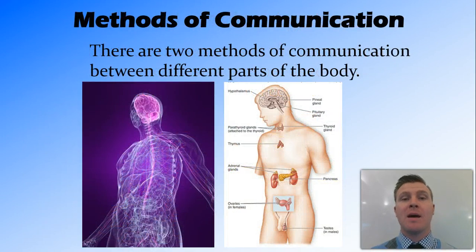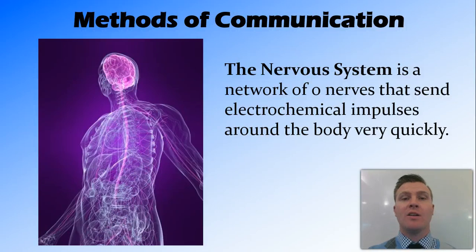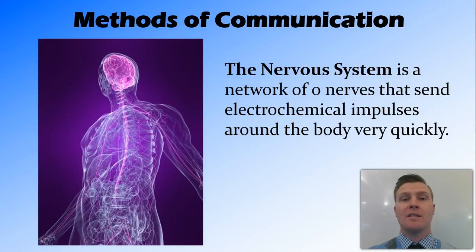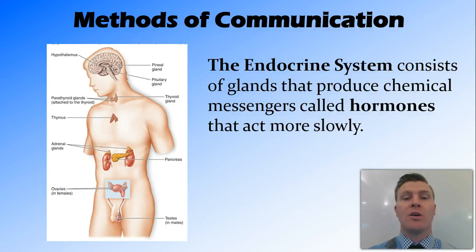There are two main methods of communication. The first one, the nervous system, uses electrochemical impulses to communicate between different organs of the body and does so very quickly. The endocrine system, on the other hand, works much more slowly and uses chemical messengers called hormones to communicate between the different organs within a system.